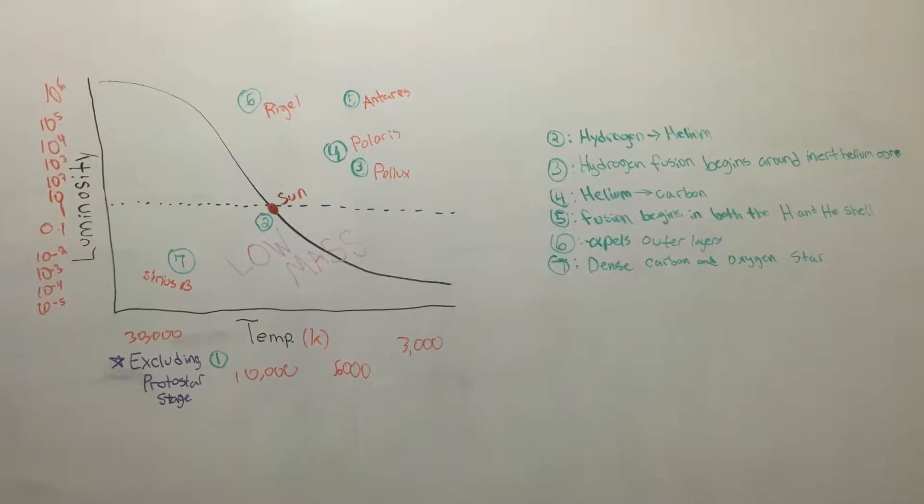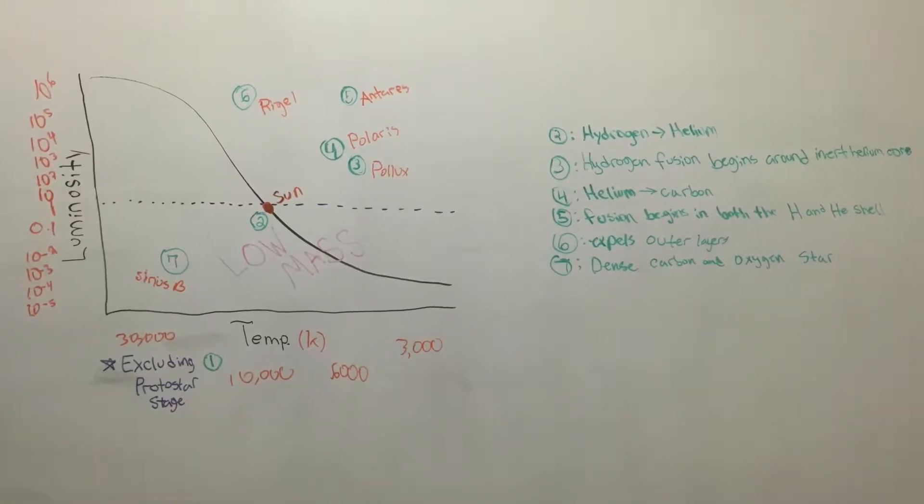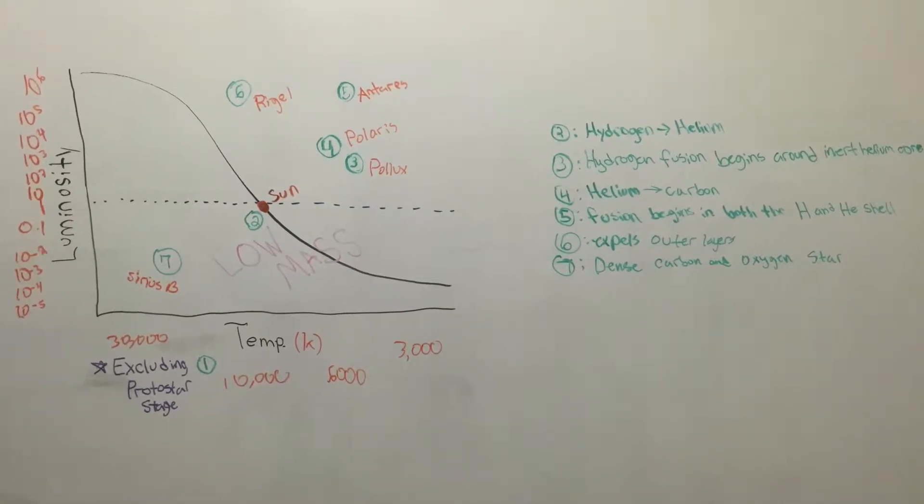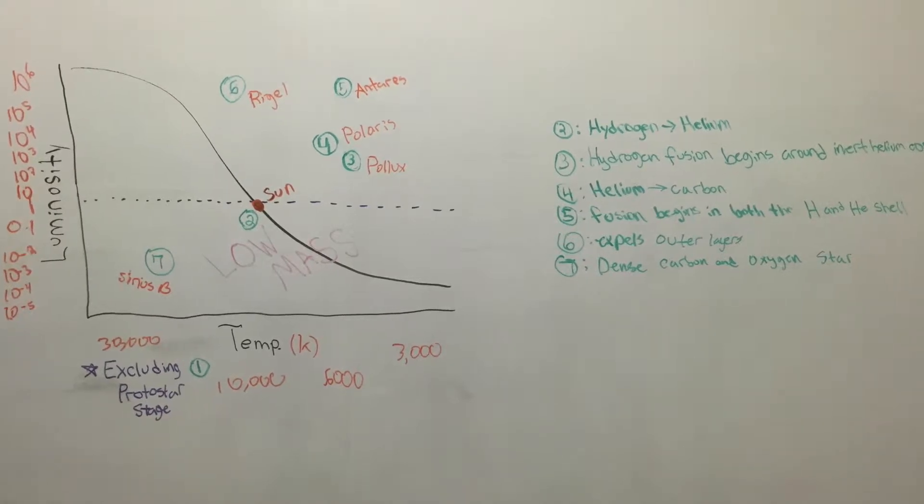From there, a double shell fusion red giant star is formed, where helium fusion begins around the inert carbon core after the core helium is exhausted.